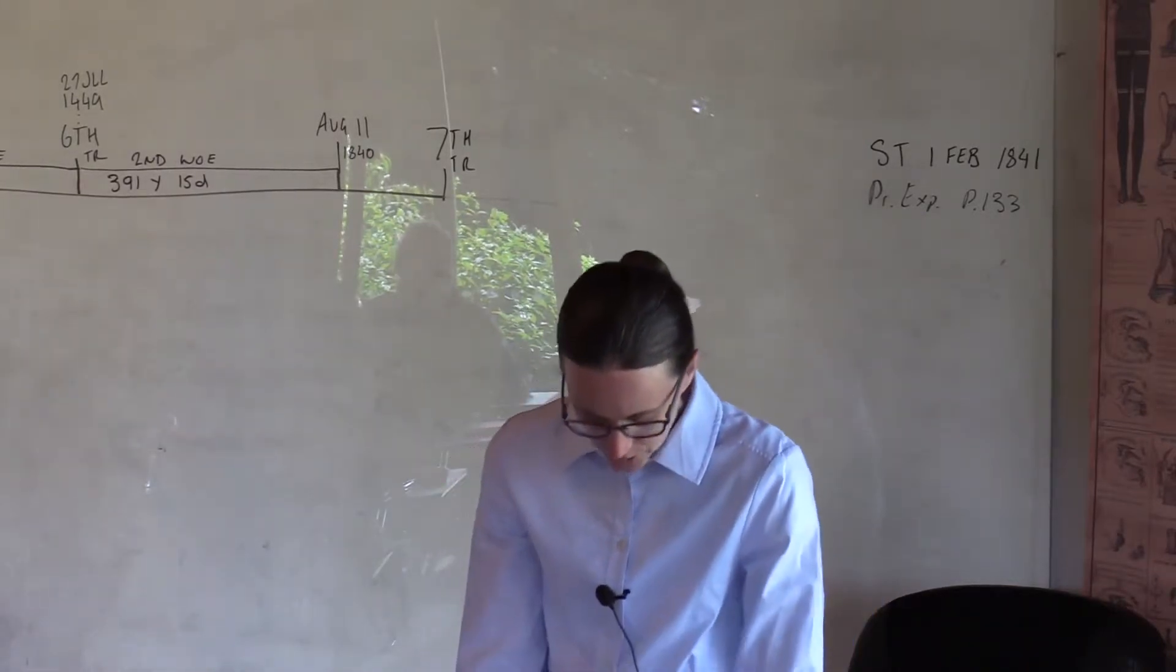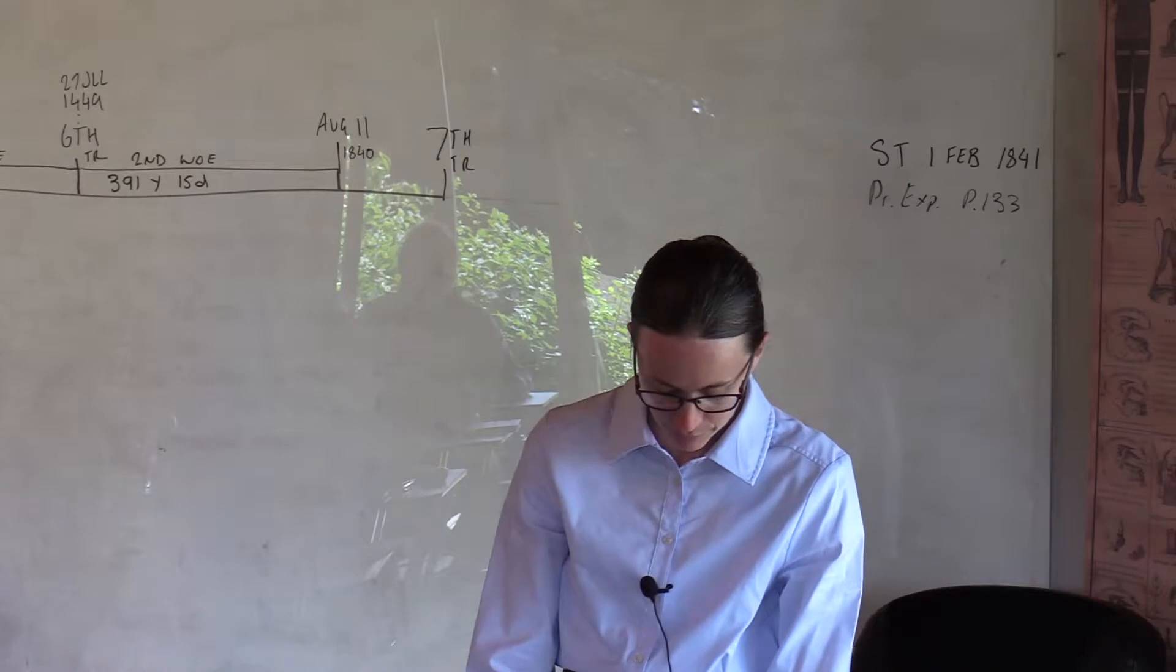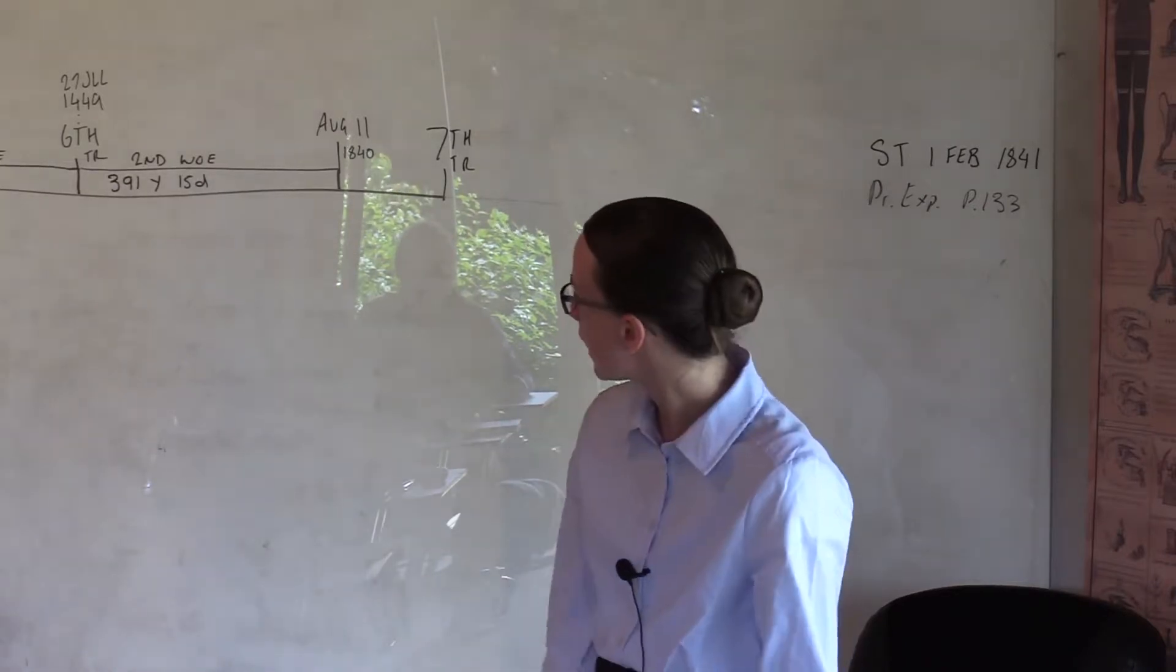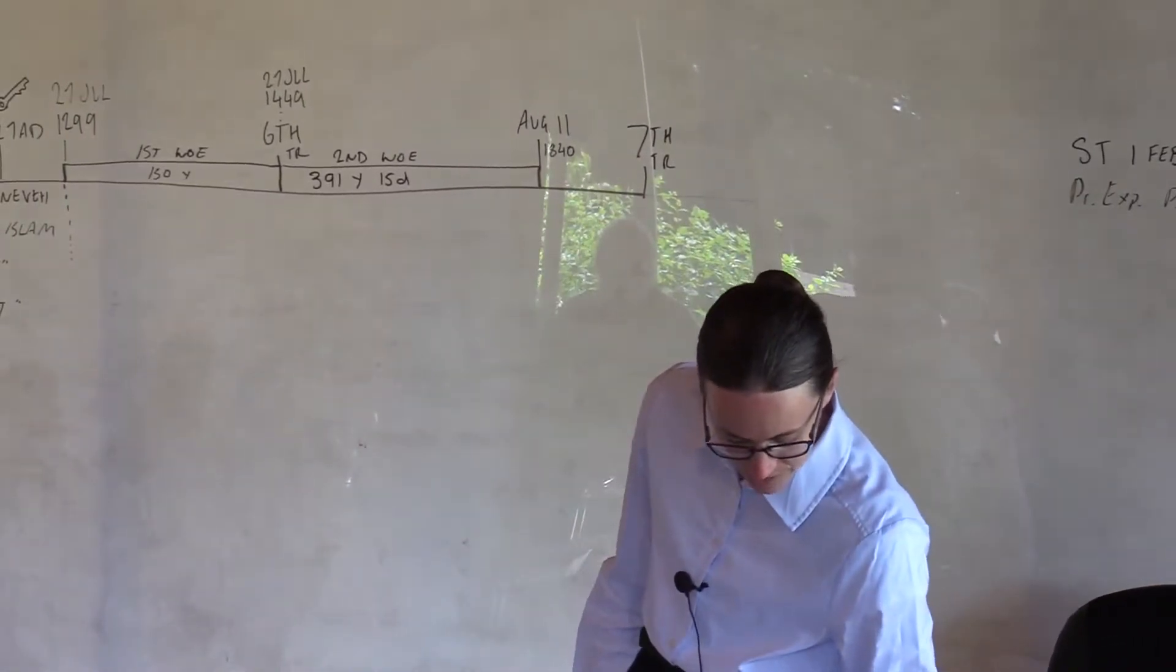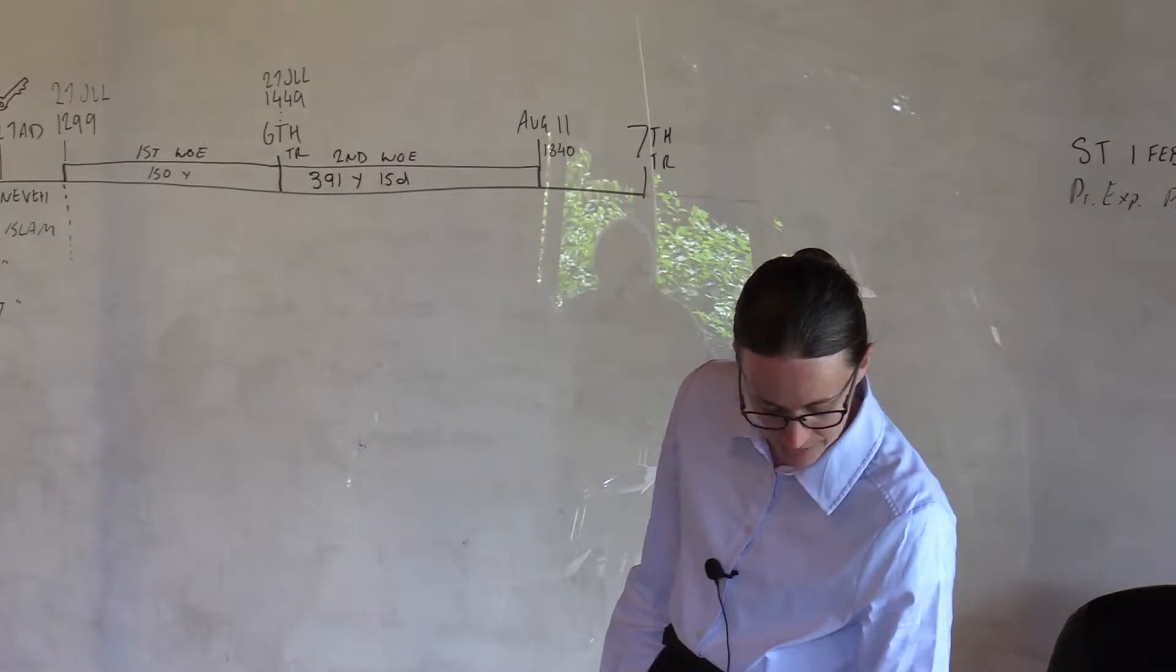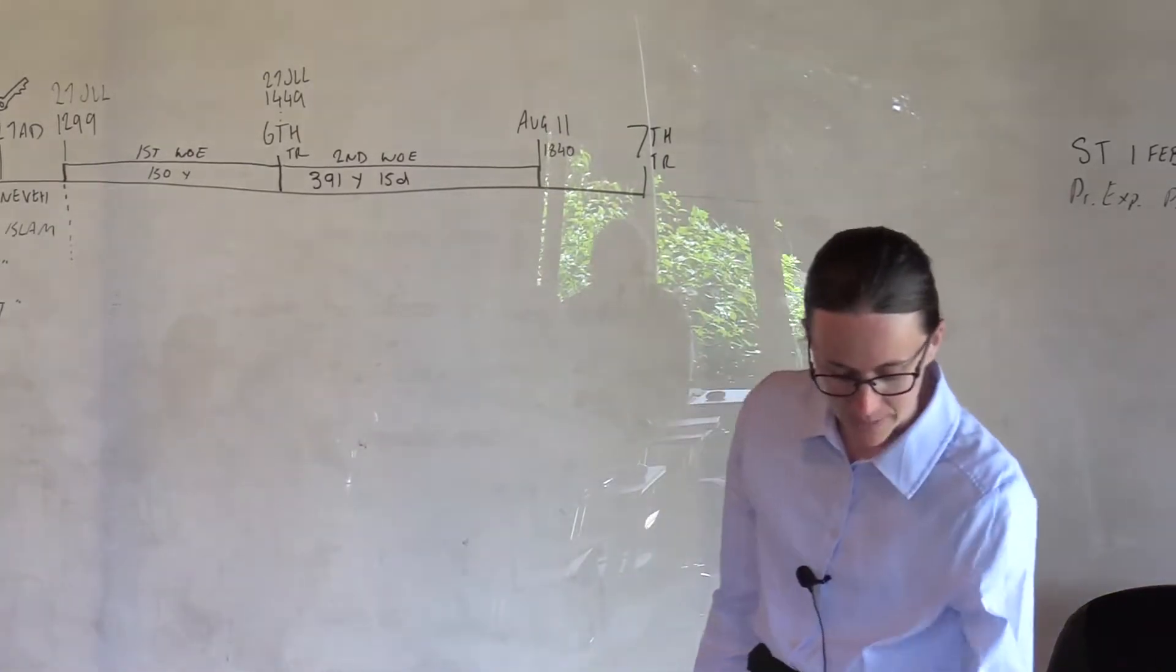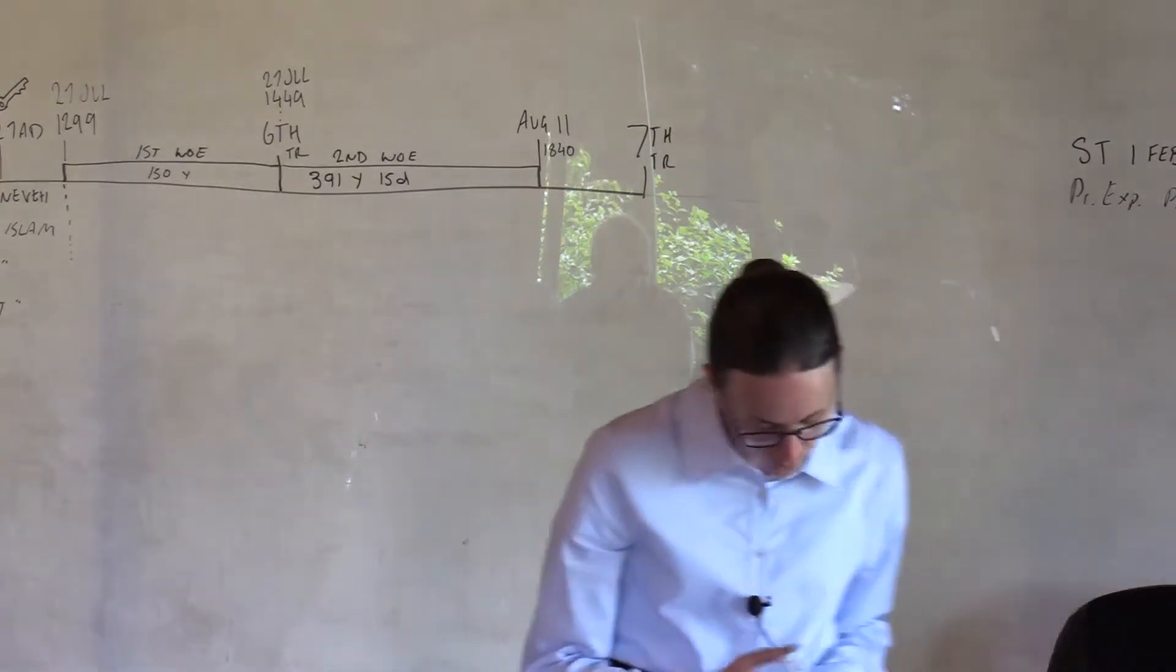So this is how Josiah Litch put it. The time during which they were to continue their conquests, this is the Ottoman Turks, was an hour, 15 days, a day, one year, a month, 30 years, and a year, 360 years, the whole amounting to 391 years and 15 days, allowing the first period, the 150 years, to have been exactly fulfilled before Deir Kozi ascended the throne by permission of the Turks, and that the 391 years, 15 days, commenced at the close of the first period, it will end on August 11, 1840, when the Ottoman power in Constantinople may be expected to be broken, and this I believe will be found to be the case. So that's Signs of the Times, August 1, 1840.